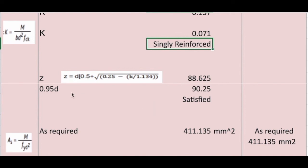And we have to make sure whether it is satisfied. So it has to be less than 0.95 into d. 0.95 into d we know is 95, it is 90.25. It is less than that, so it is satisfied.